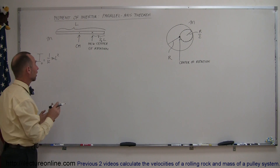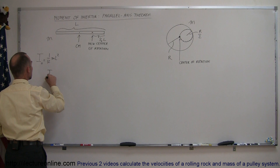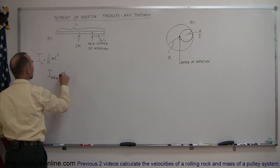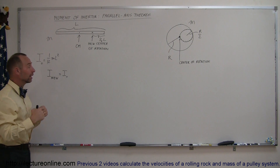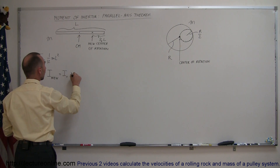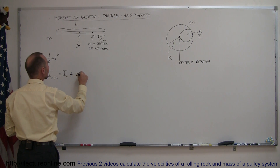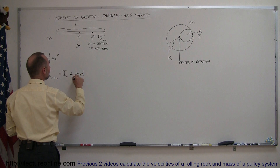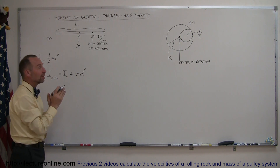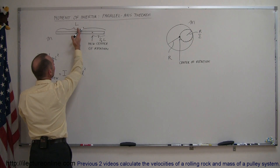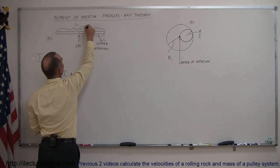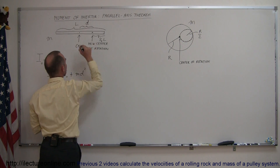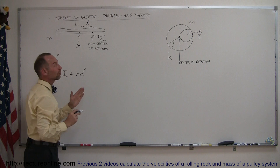The parallel axis theorem says that the new moment of inertia is equal to the original moment of inertia where it's rotating about the center of mass, plus the mass of the object times the displacement of the object squared. The displacement meaning from the point where the center of mass is to the new point of rotation — this distance right here is considered the displacement d.